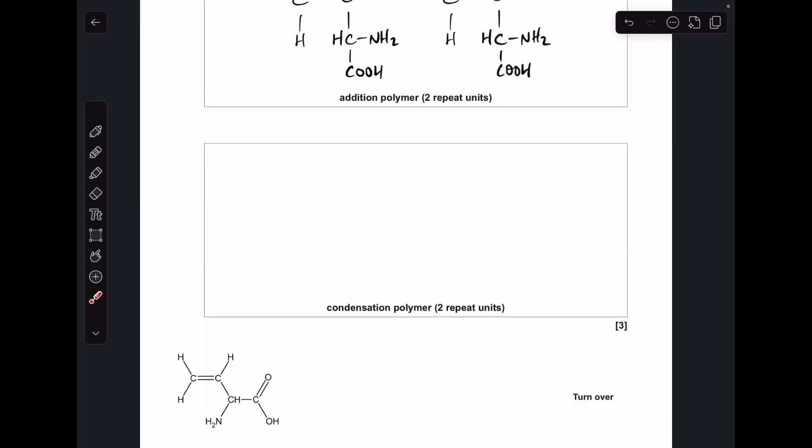And then moving on to the condensation polymer, we've got an NH2 group and a carboxyl group. So we can kind of take out water and join them together, but it hasn't been drawn in a very friendly way. So again, I'm just going to reconfigure it to make it easier.